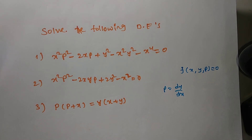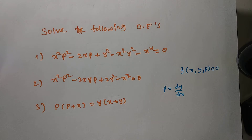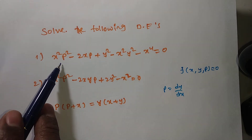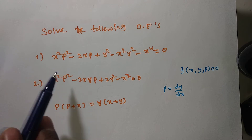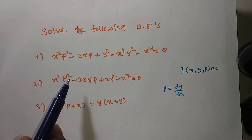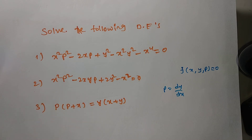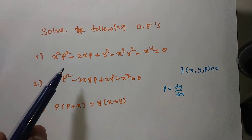To solve these problems we can use: solve for p, solve for x, solve for y, Clairaut's, or different methods. But here we are solving using solvable for p. Solvable for p means we convert this degree-2 expression into a product of two linear factors, or degree-3 into a product of three linear factors. This converts the equation to first order first degree.